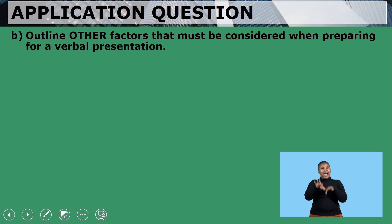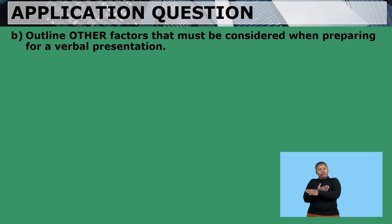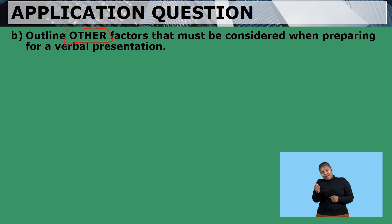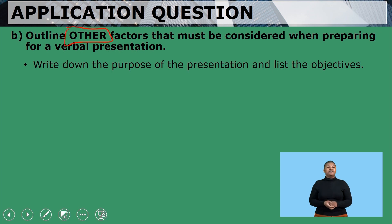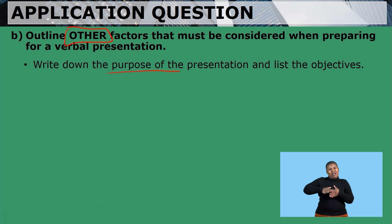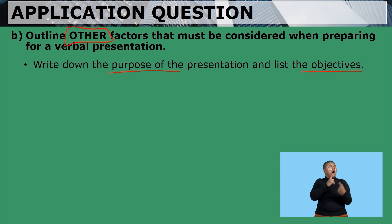The next question says: outline other factors that must be considered when preparing for a verbal presentation — other than the ones already mentioned. First, you need to write down the purpose of the presentation and list the objectives. What is the whole point of doing this presentation? What are you aiming to achieve? What are the goals? List them down — that is important.